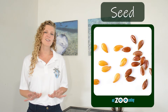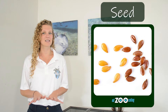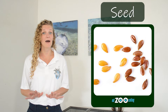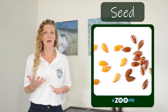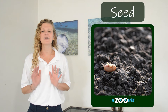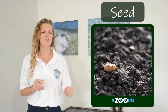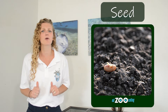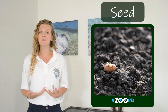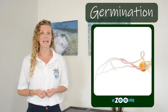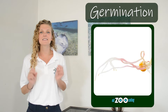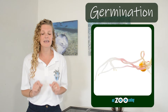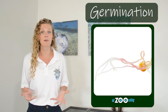Most plants start their life as a seed, and we're gonna talk about where that seed comes from in just a little bit. These seeds end up in the environment, in the soil, and if the conditions are just right — the right amount of sunlight, water, and the perfect temperature — the seed will do something we call germination.